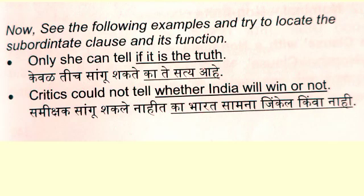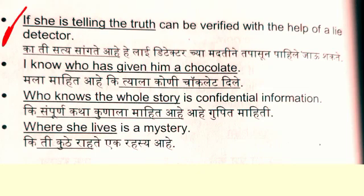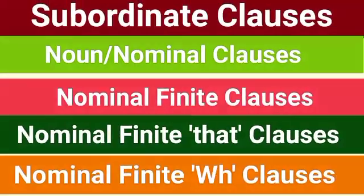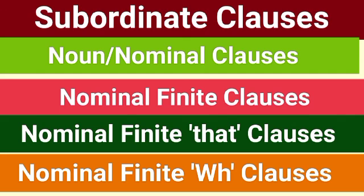Now look at these further examples: 'Only she can tell if it is the truth'; 'Critics could not tell whether India will win or not'; 'If she is telling the truth can be verified with the help of a lie detector'; 'I know who has given him a chocolate'; 'Who knows the whole story is confidential information'; 'Whether she leaves is a mystery.' Note that adjective/relative clauses and adverb clauses can also be introduced with WH words and 'that.' So don't concentrate only on the words — concentrate on the function of the group of words in the sentence.